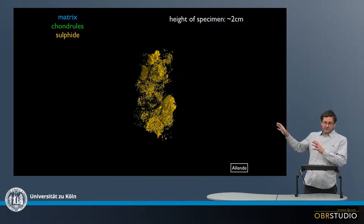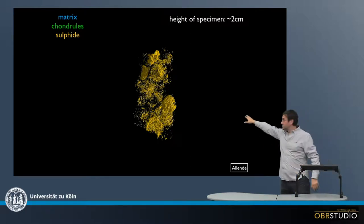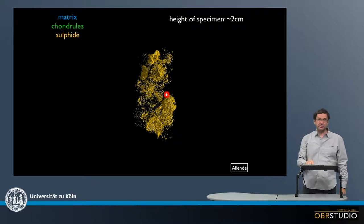And then we can see in some regions that some chondrules have shells of sulfides, which can be seen here. This is a shell around a chondrule that was there previously.